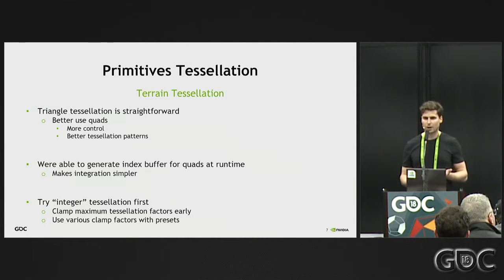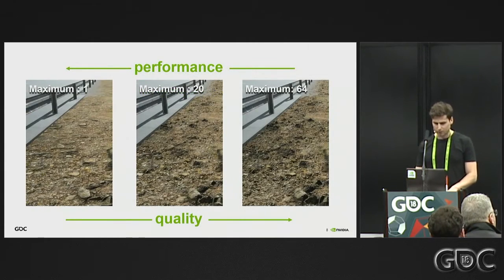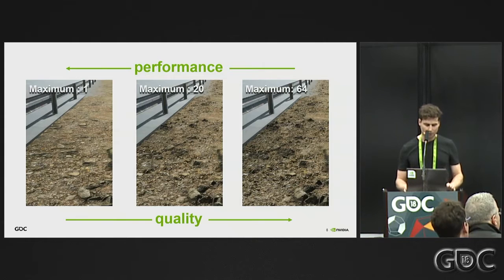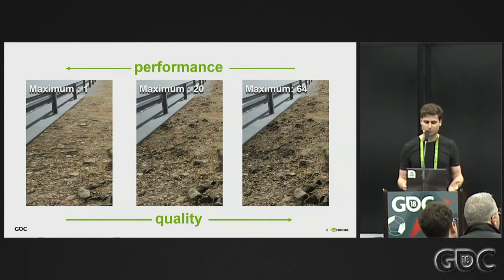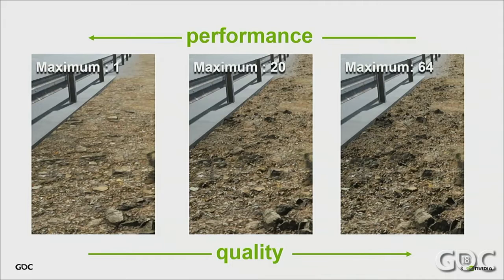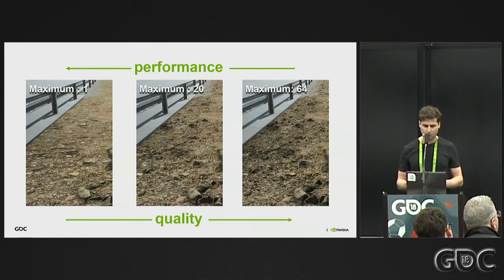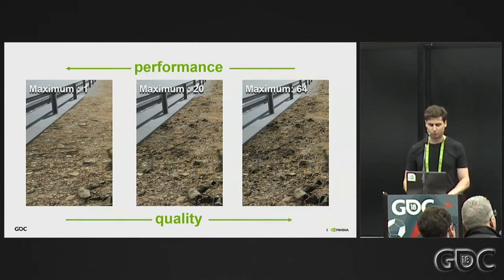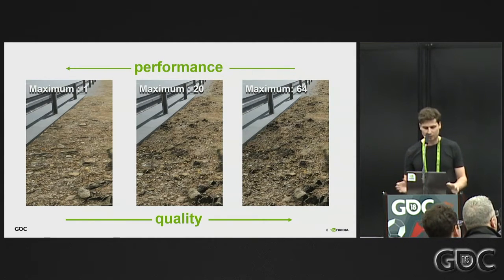Let's look at a screenshot showing three different tessellation factors. The left-most image shows tessellation factor clamped at one, which means no tessellation. Then there is 20 and 64, which is the maximum supported in the API. The middle screenshot shows factor 20, and although it's pretty visible, it's not capable of catching all tiny details compared to 64. It still looks much better than the non-tessellated version. This clamping can be used to find the best performance-to-quality ratio in your game — just clamp tessellation factors and use them with your presets.